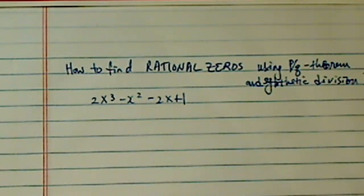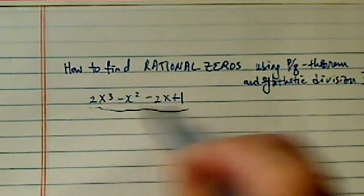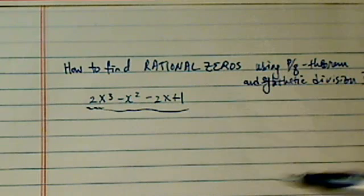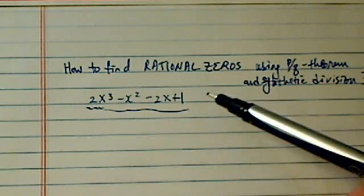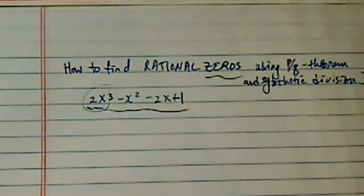Hi there. Thank you for watching this clip on how to find rational zeros using PQ theorem and synthetic division. Synthetic division comes really handy in solving higher order polynomials. Unlike second order polynomials where we have factoring and quadratic equation, higher polynomials trying to find a zero, it's complicated. It's a lot more work.